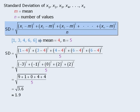So the standard deviation of this set of numbers is 1.9. Now it's very important to know that on the GRE you will never be required to use this formula to calculate the standard deviation of a set of numbers. In fact, questions involving standard deviation will typically test your knowledge of what standard deviation measures. Since this is related to the way standard deviation is calculated, let's see if we can get a better idea of how this formula works.